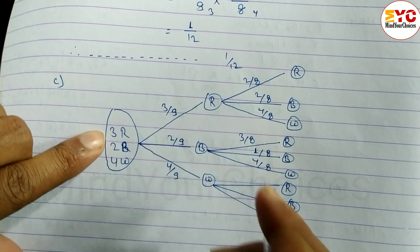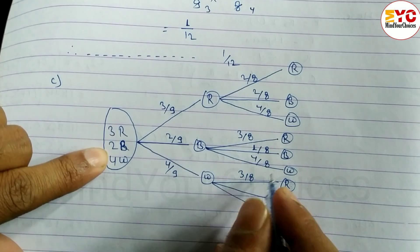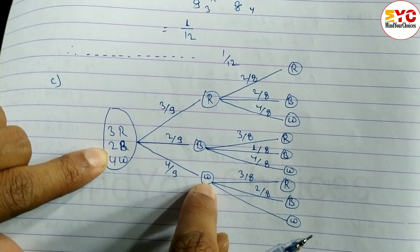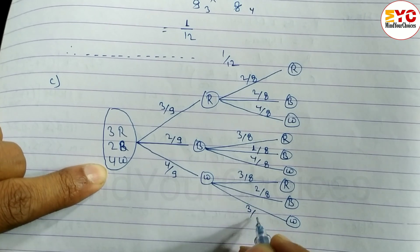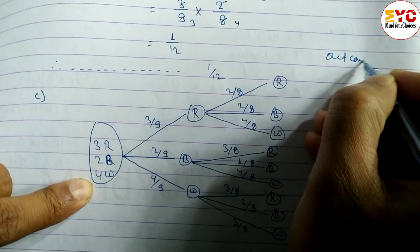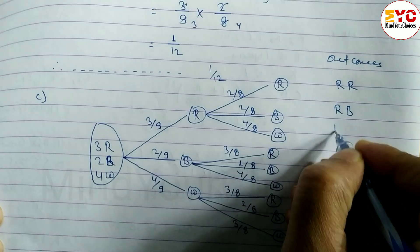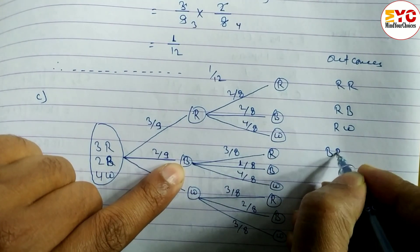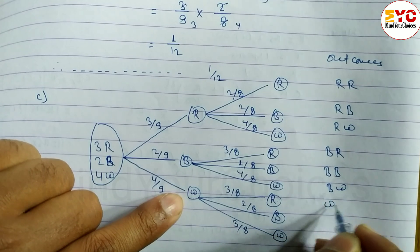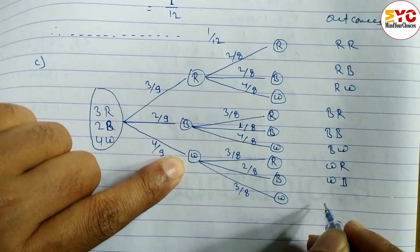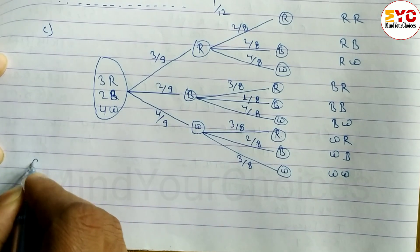If the first ball was white, then red ball count is same so P(red) = 3/8, P(black) = 2/8, and white is decreased so P(white) = 3/8. The outcomes in the tree diagram are: RR, RB, RW, BR, BB, BW, WR, WB, WW. This completes Question C.